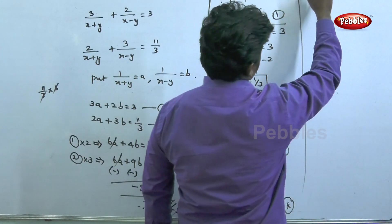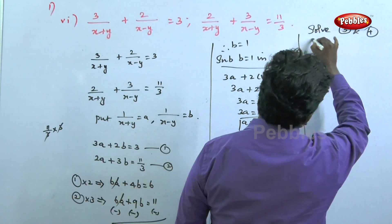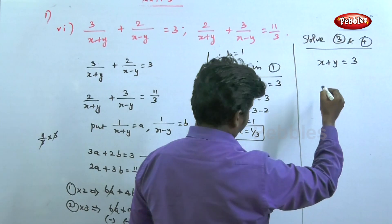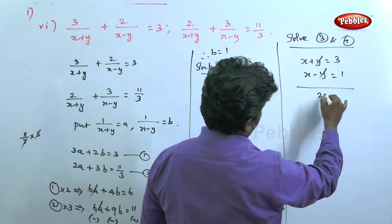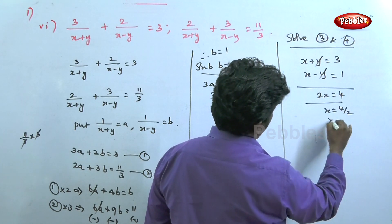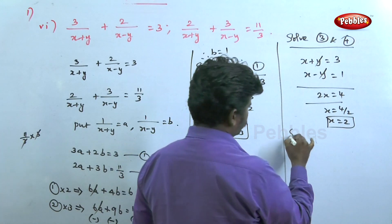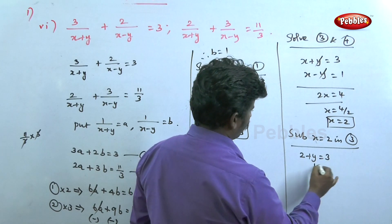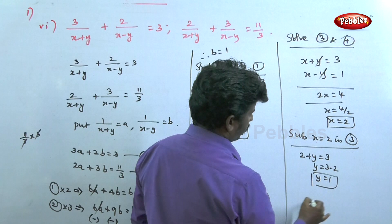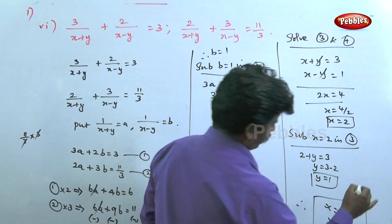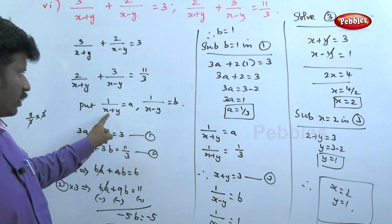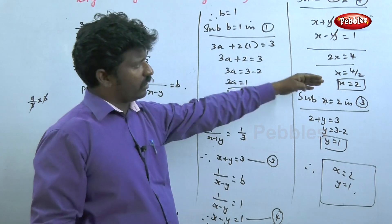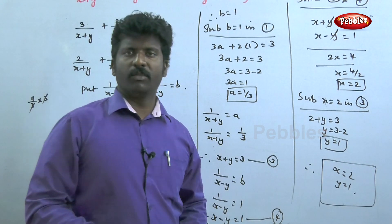Now back-substituting: 1 by x plus y is equal to a, which is 1 by 3, so x plus y is equal to 3. And 1 by x minus y is equal to b, which is 1, so x minus y is equal to 1. Adding these: 2x equals 4, so x equals 2. Substituting back: 2 plus y equals 3, so y equals 1. Therefore x is equal to 2, y is equal to 1.